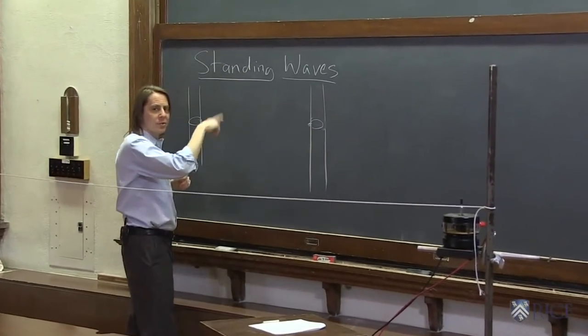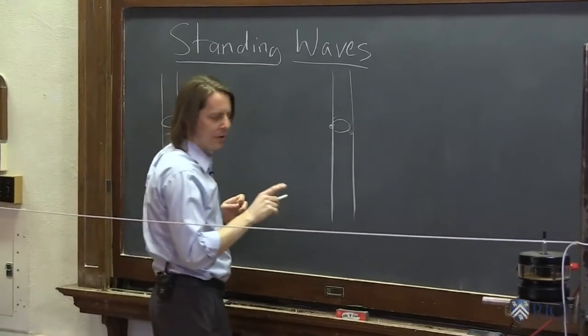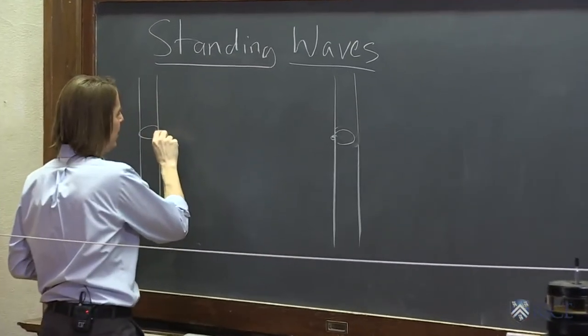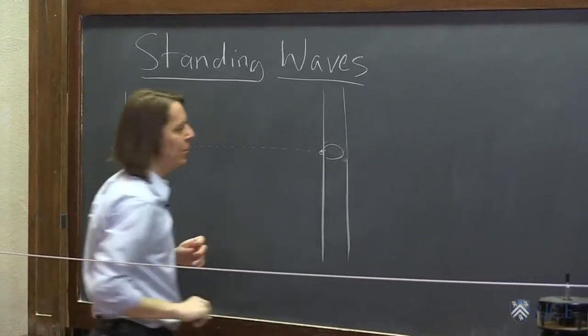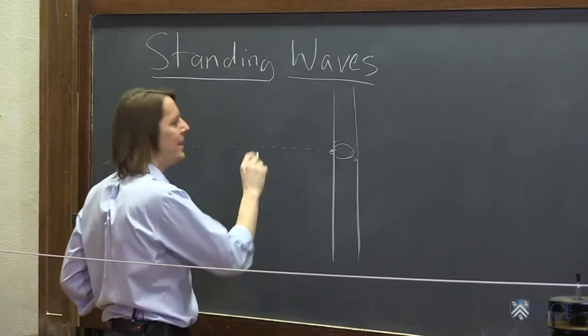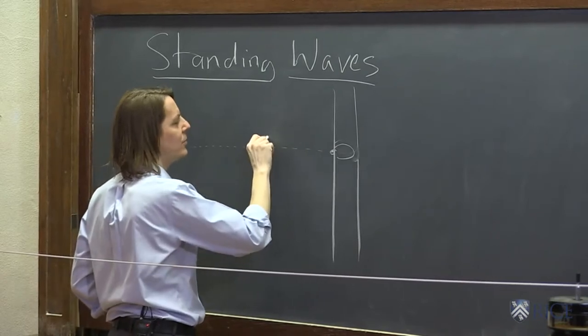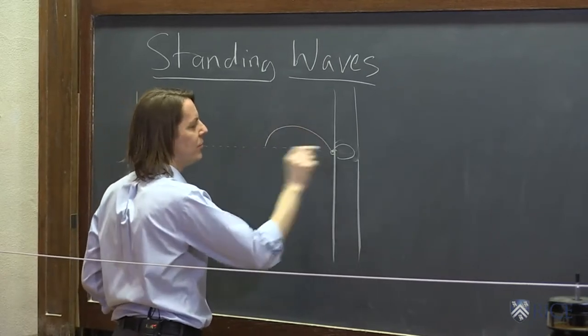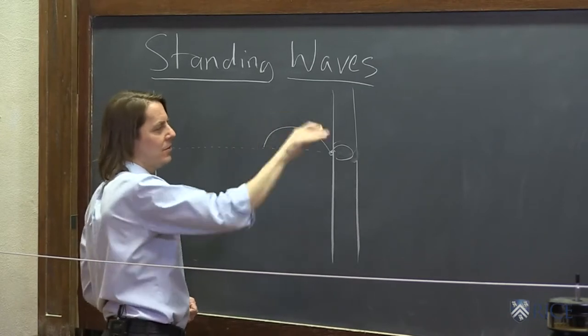Say we have a sinusoidal wave approaching this end of the string here. I'm going to draw the dotted line for where the string would be when it's at rest. That will help me draw my sinusoids. And then I'm going to draw this, a sinusoidal like that. What if the string were in a sinusoidal pattern, and that's like the peak going that way?